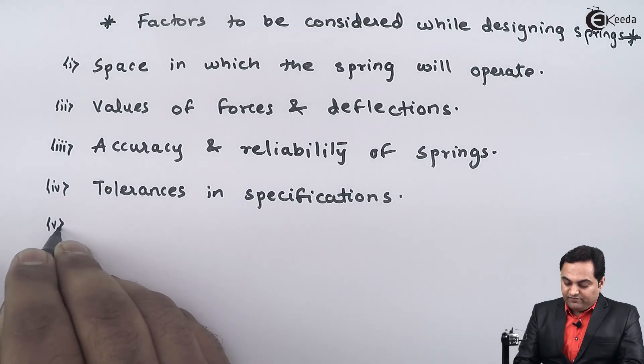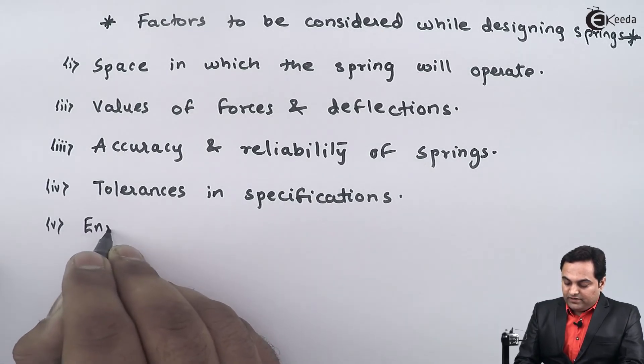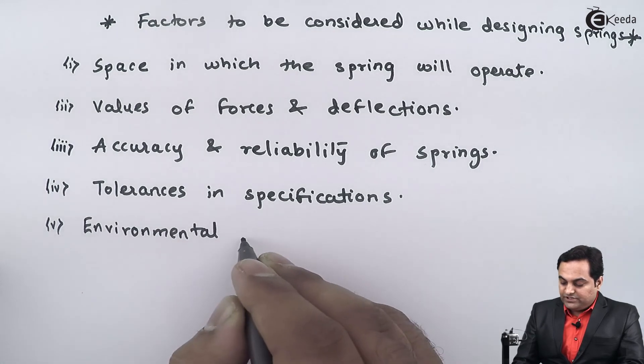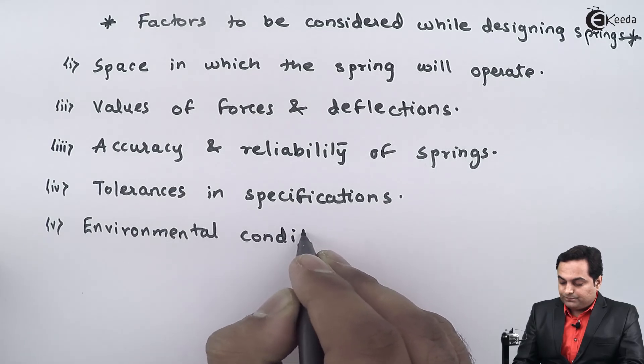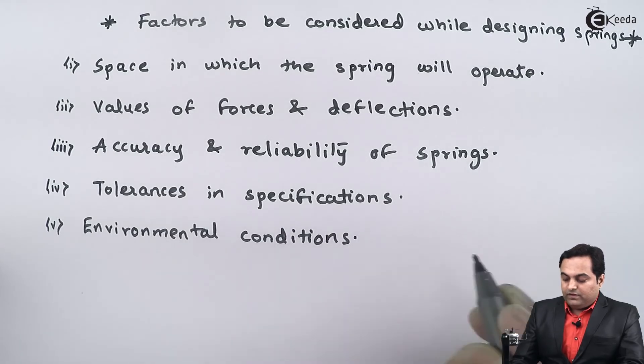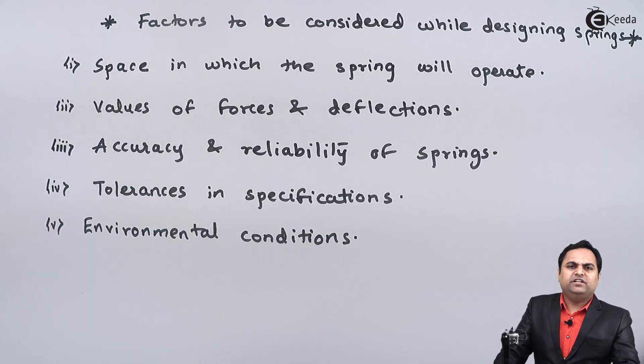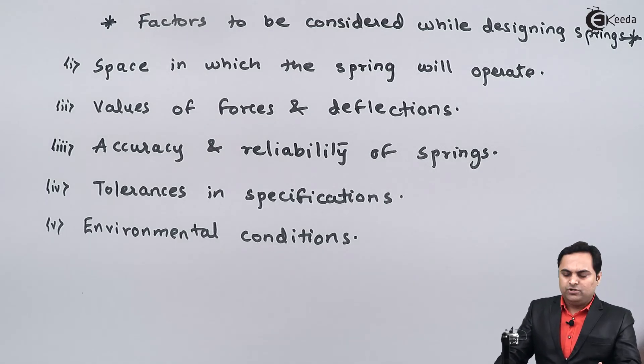Next, we have environmental conditions. Since springs are mostly made up of metals, we have to see in which environment they are used because springs would be subjected to atmospheric changes. The spring will change its properties because of the temperature. It can expand in high temperatures or it will contract in low temperatures.